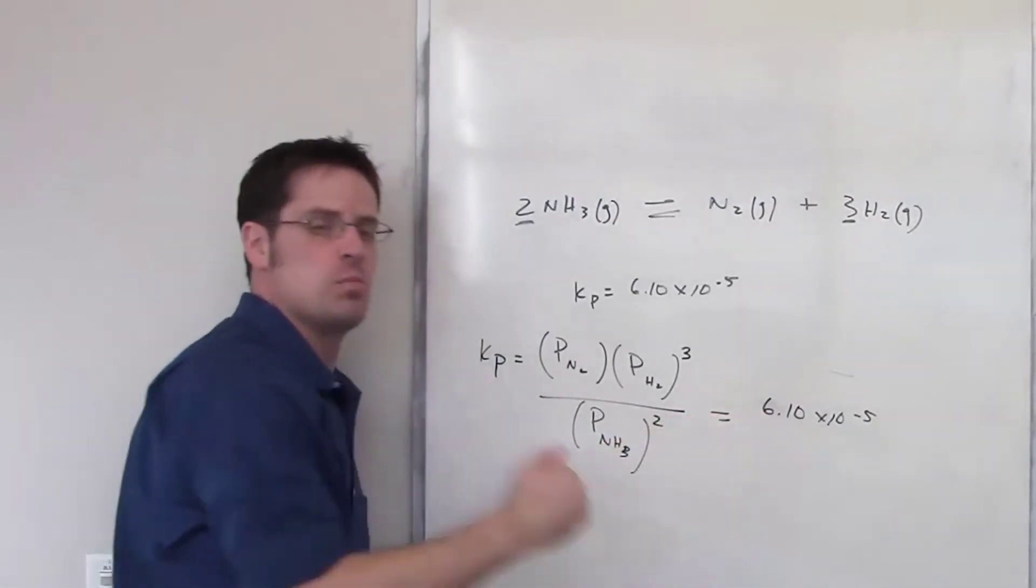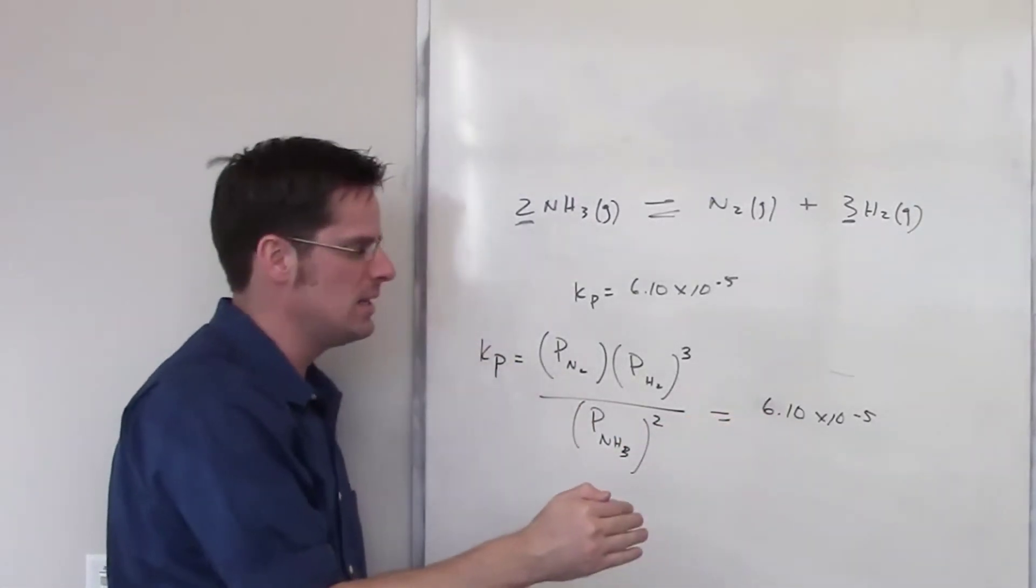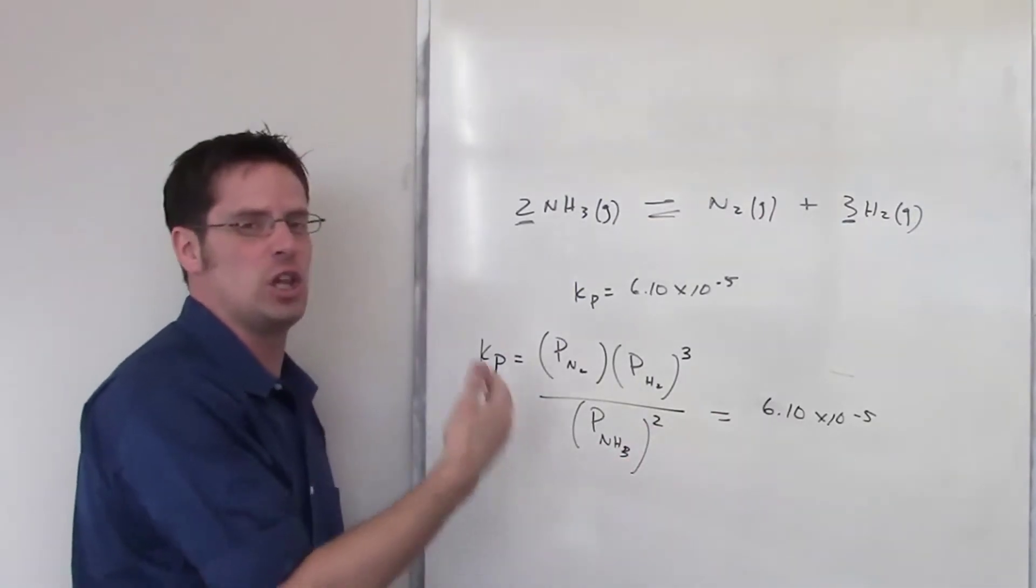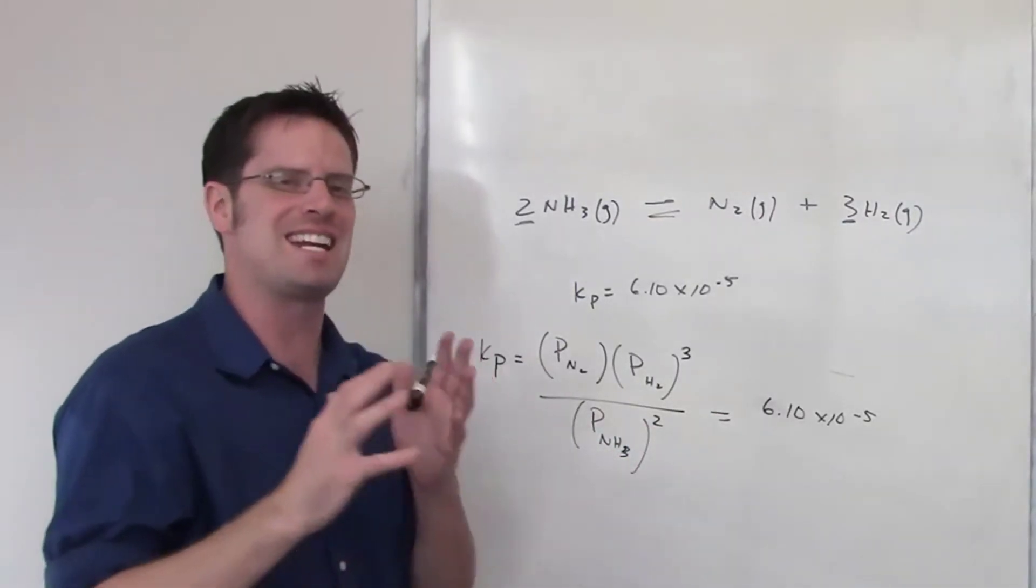Well, mathematically speaking, because that number is much smaller than 1, the denominator has to be much larger than the numerator. So that tells us that at equilibrium,